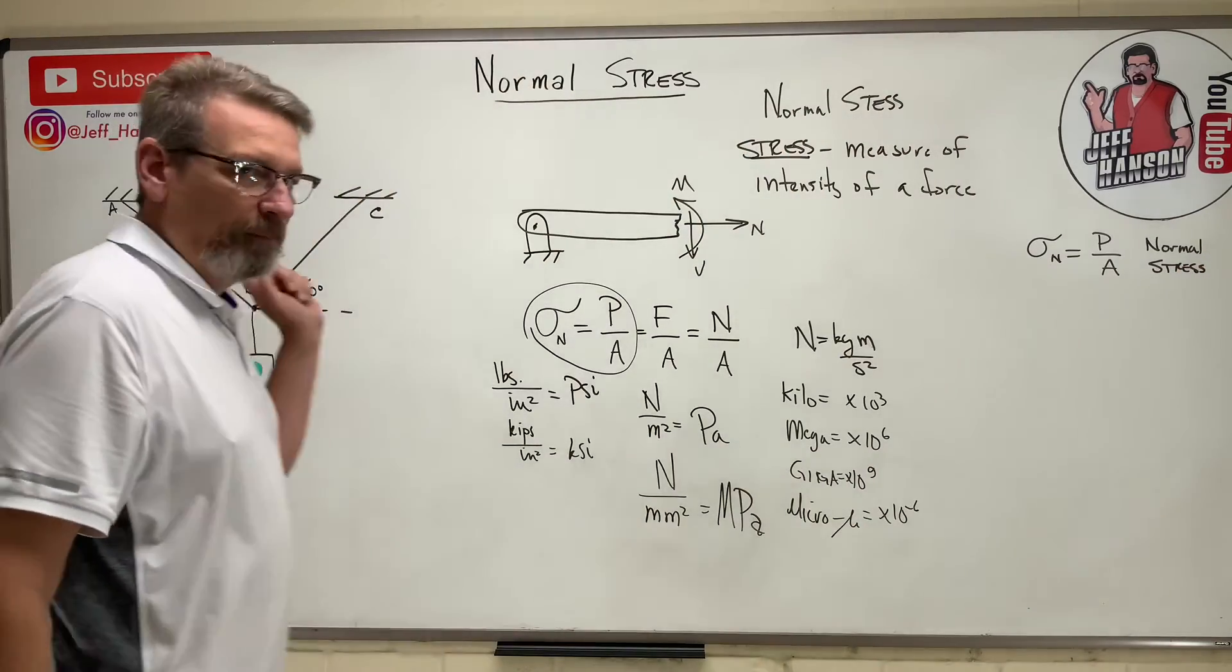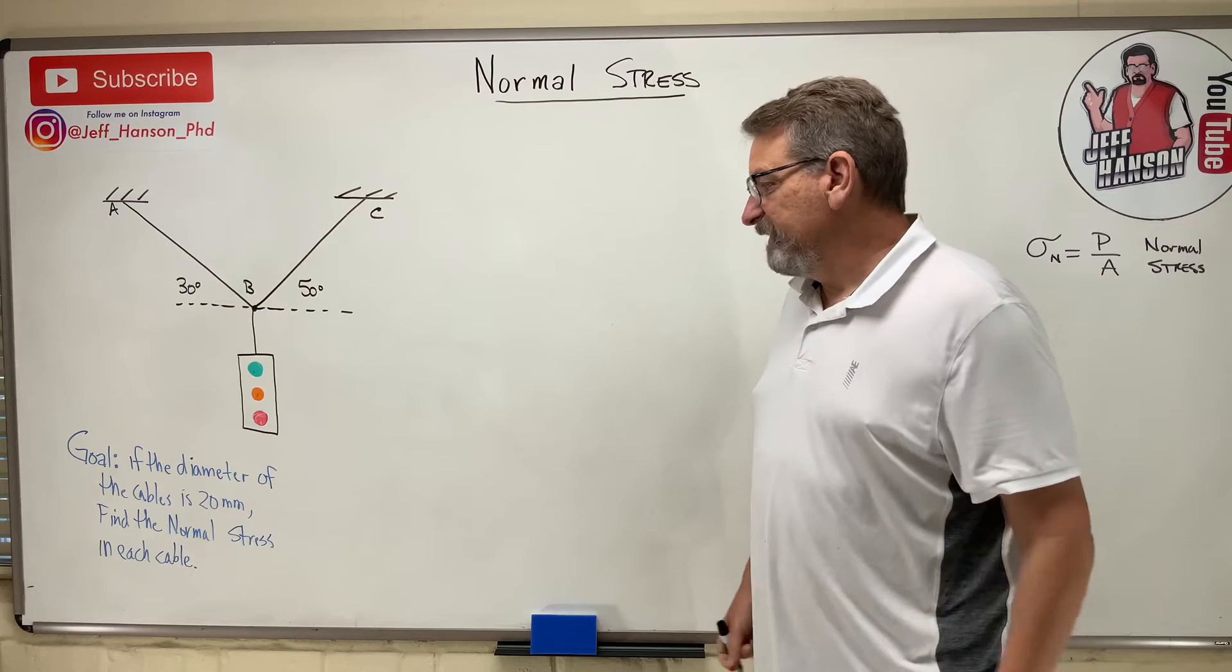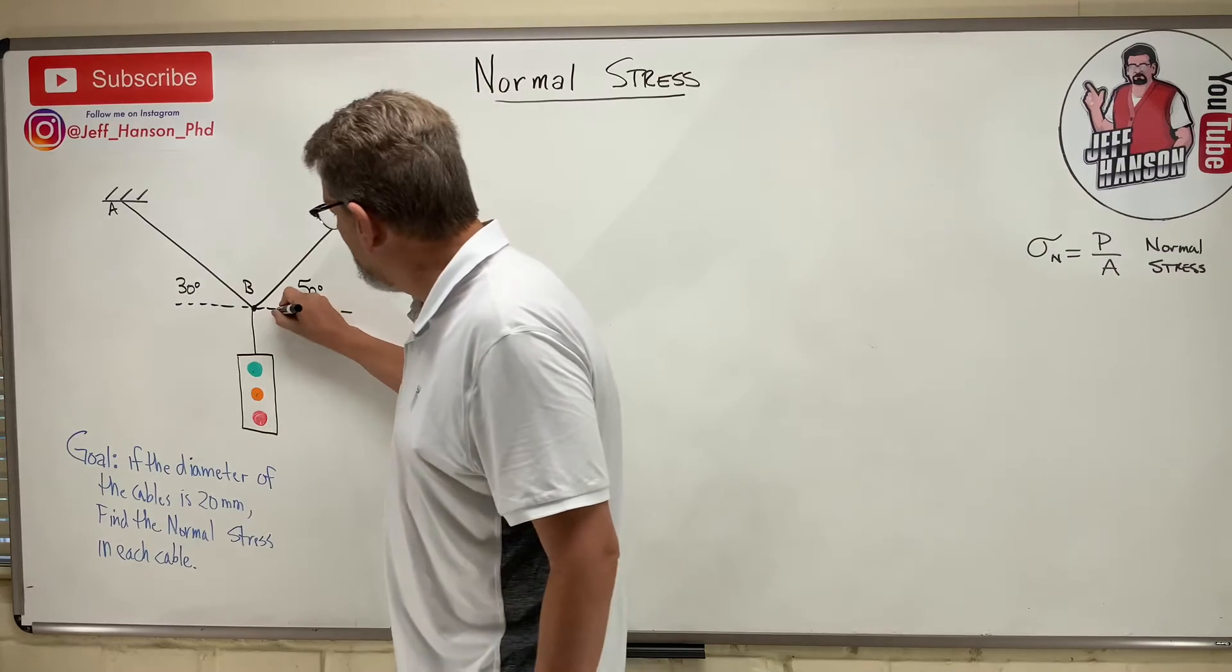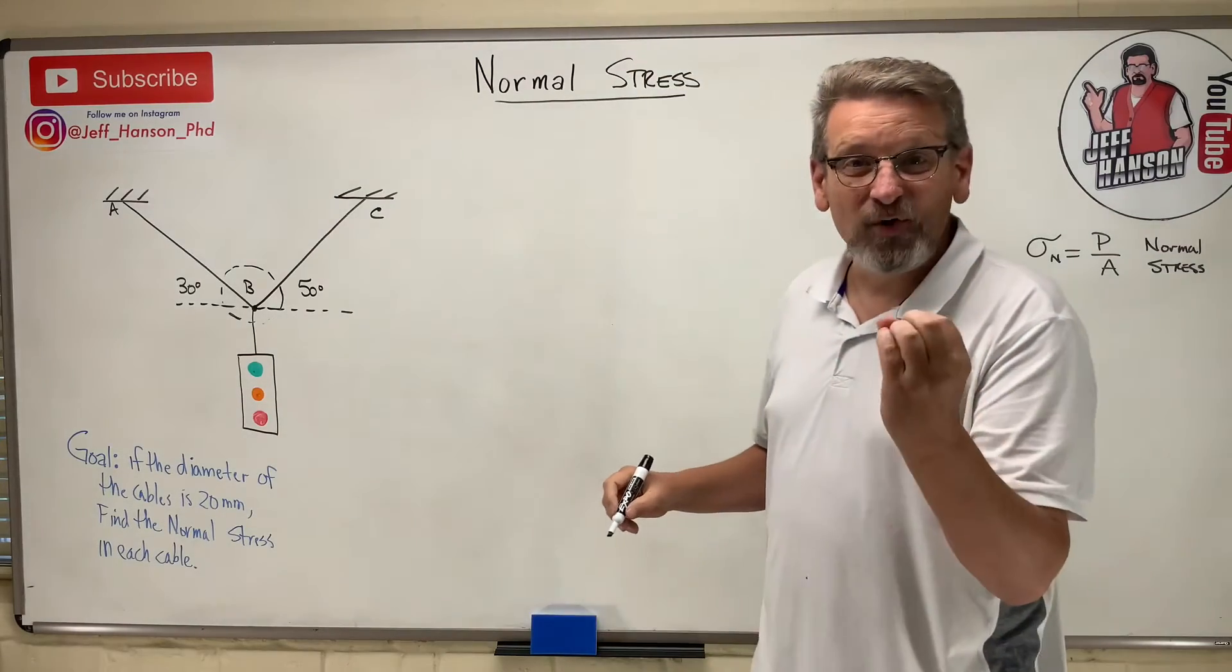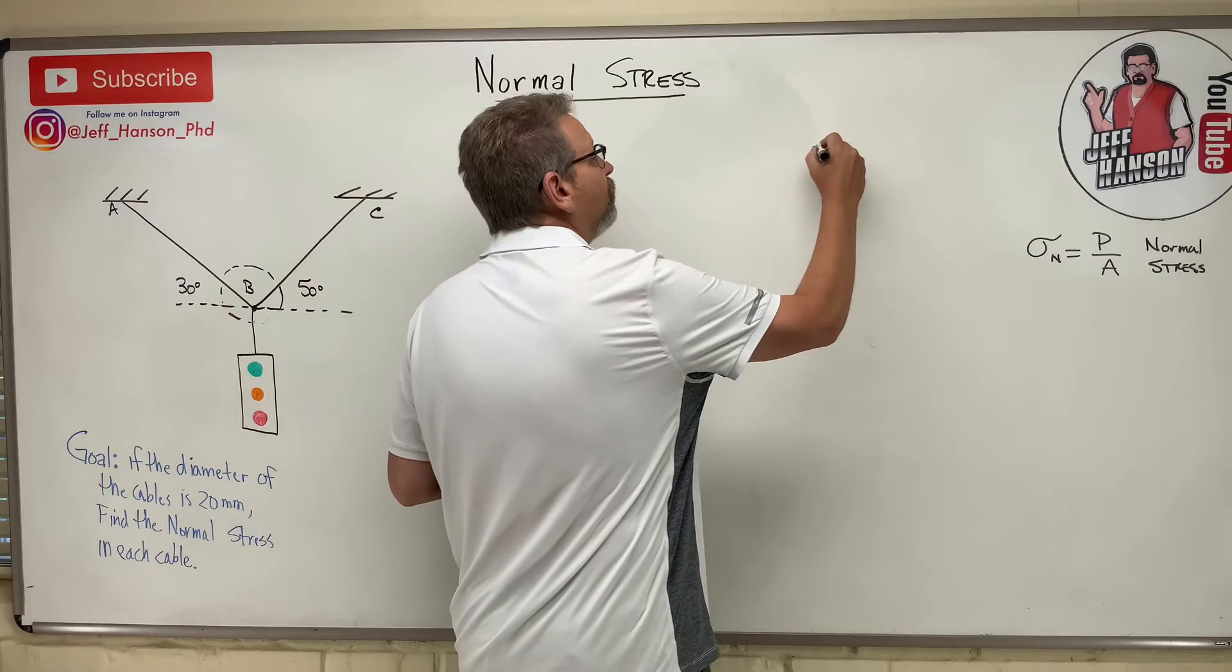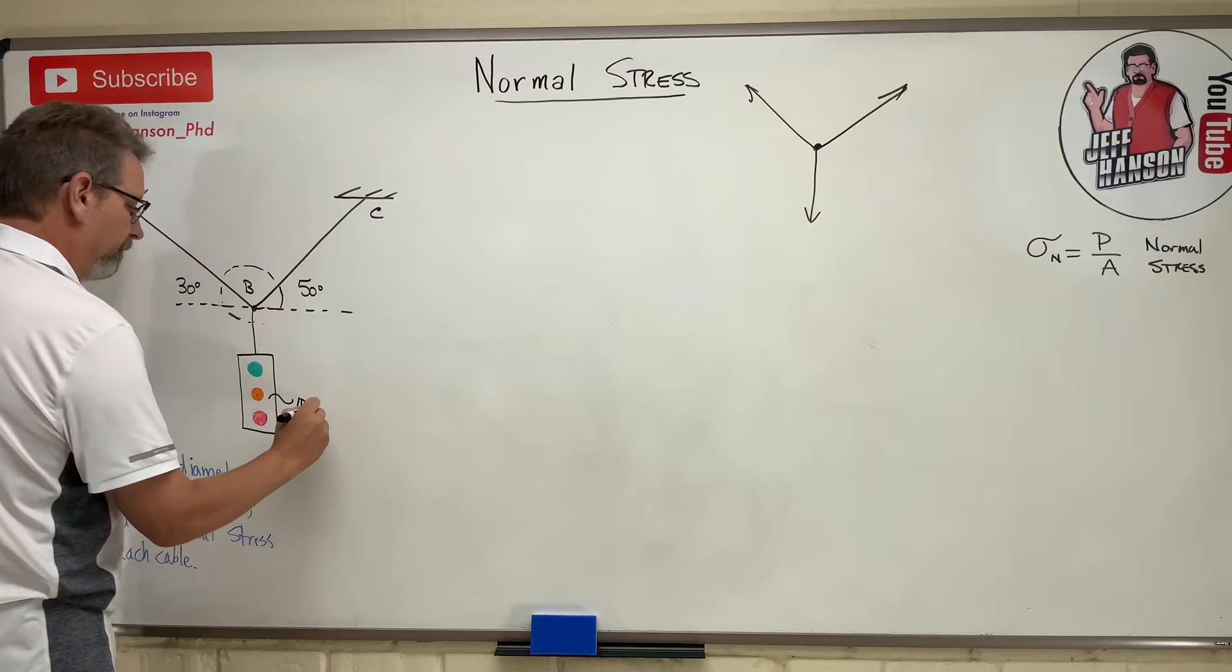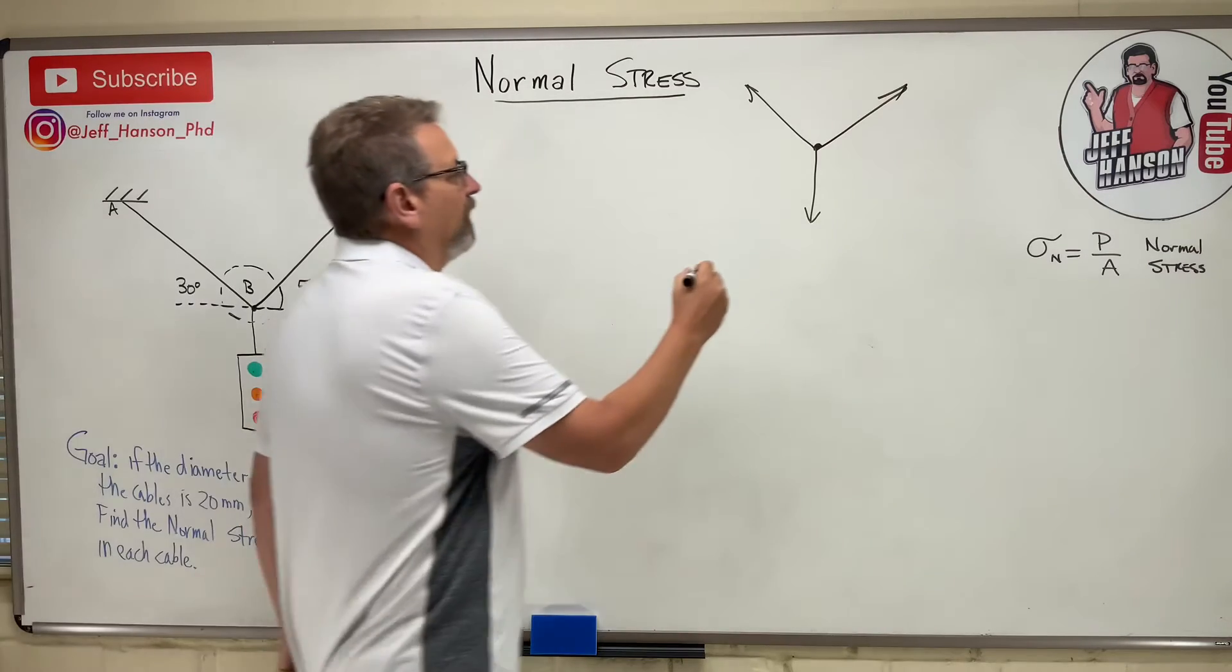All right, let me erase this. I have a little problem for us to use our normal stress on. This problem says if the diameter of the cables is 20 millimeters, find the normal stress in each cable. You know what? That looks like a statics problem, doesn't it? If I went in and did a free body diagram on joint B there, I might be able to figure that out. And that's exactly what you have to do. That's why statics is so important, because every solids problem starts off with a statics problem, every one of them.